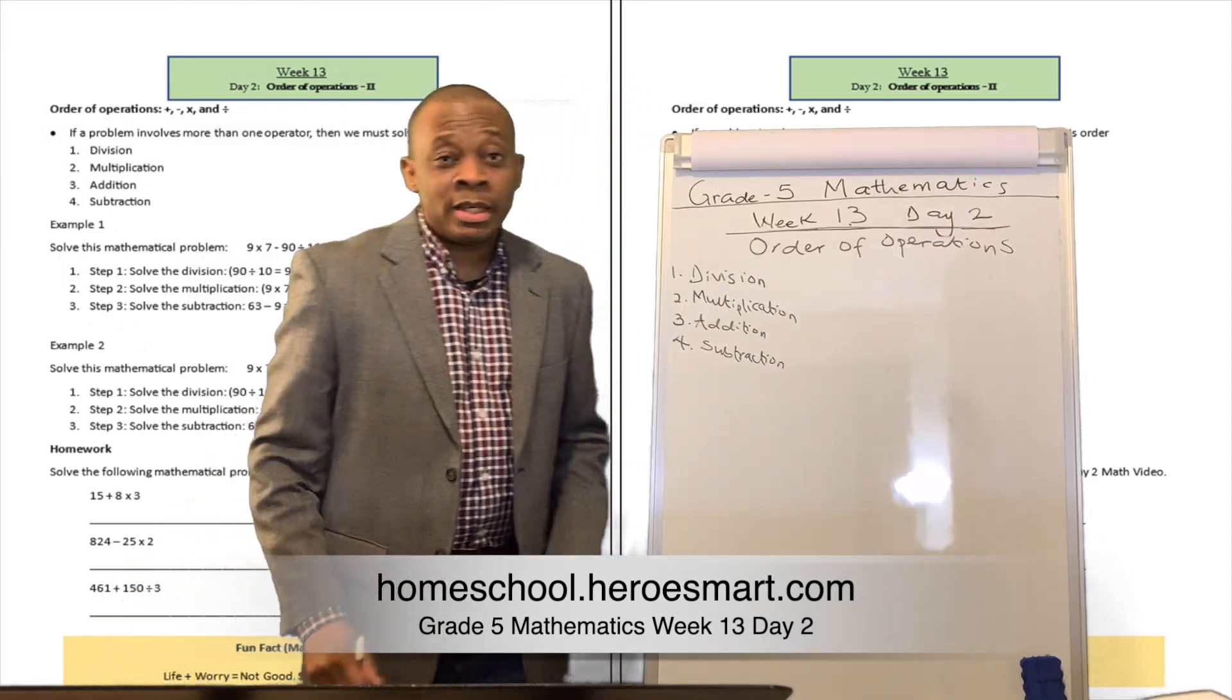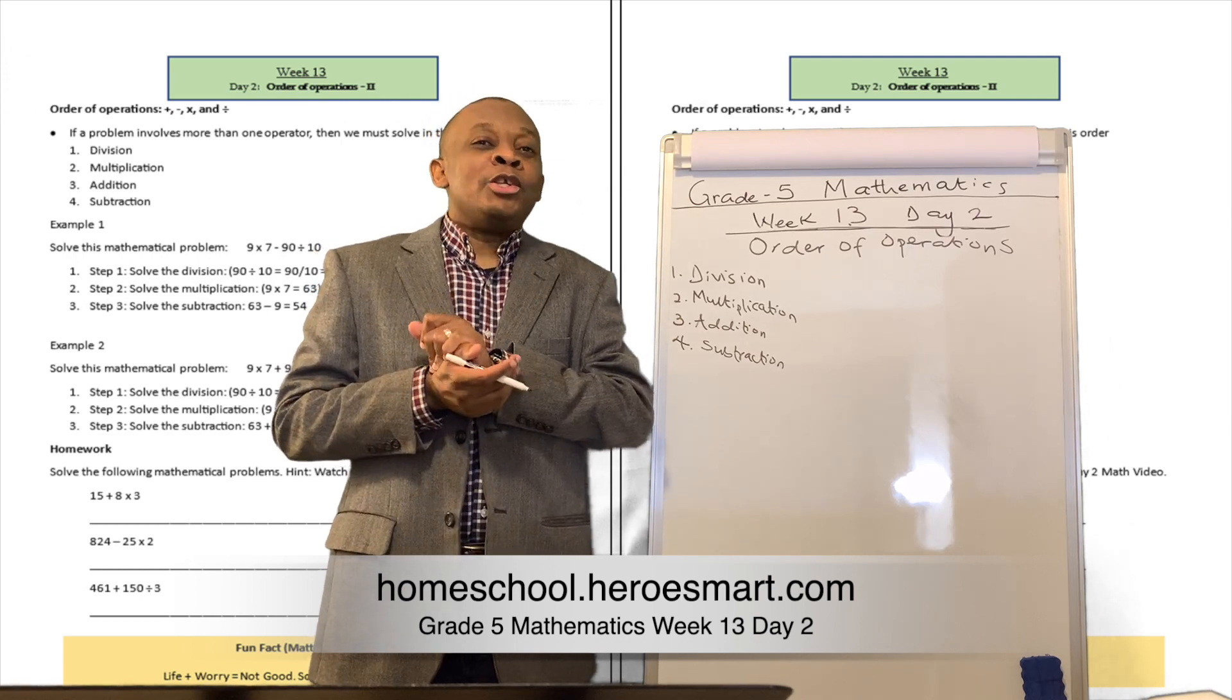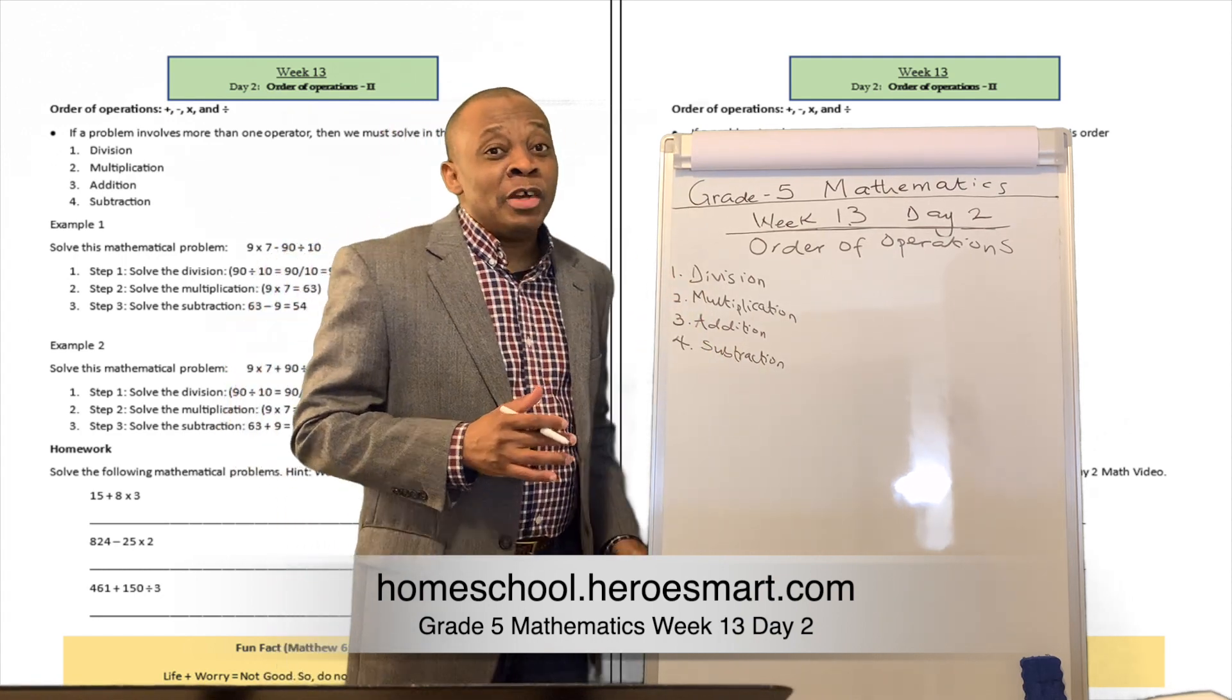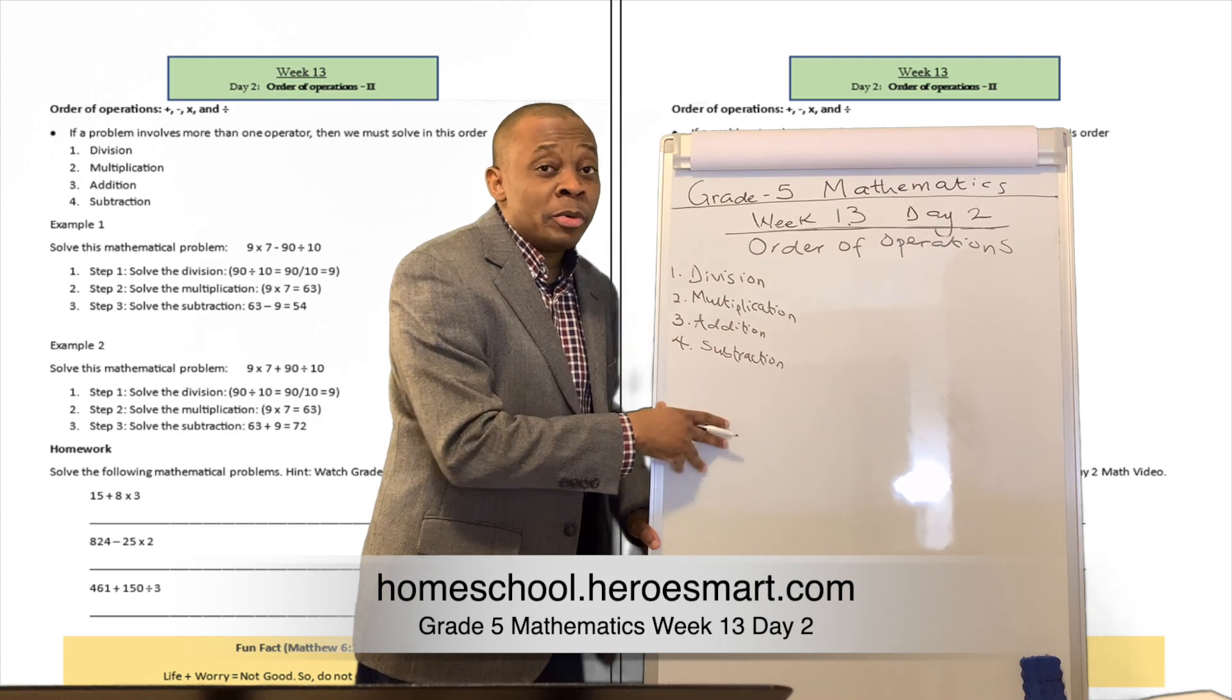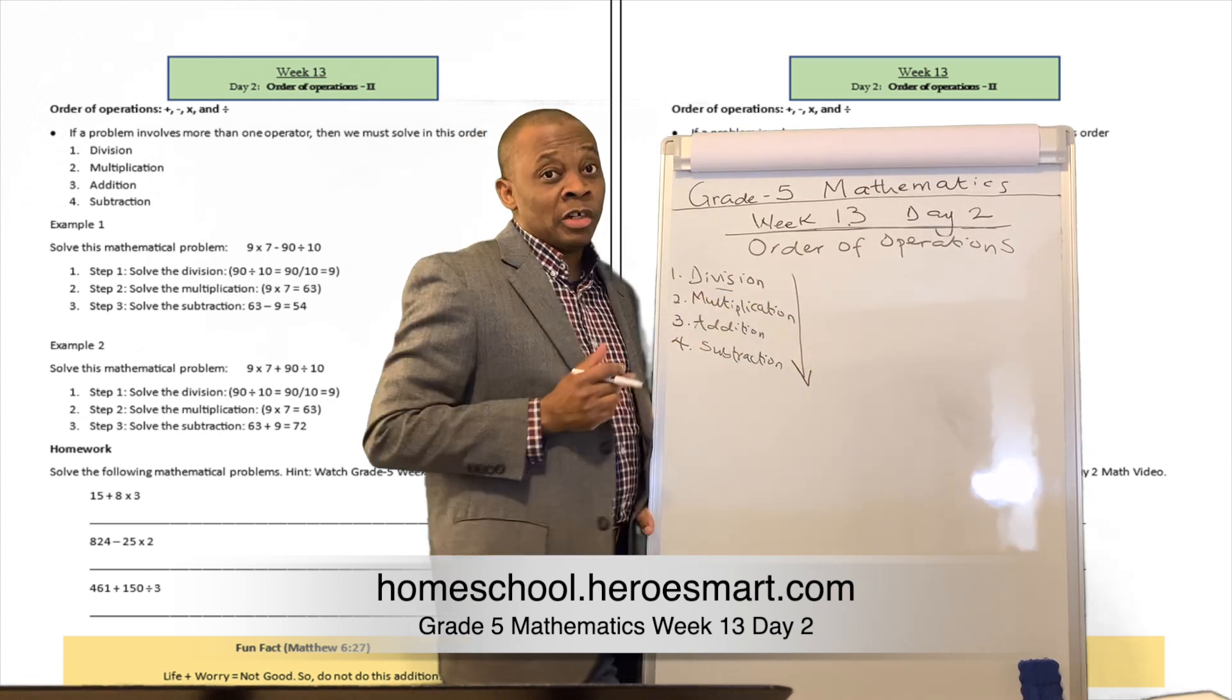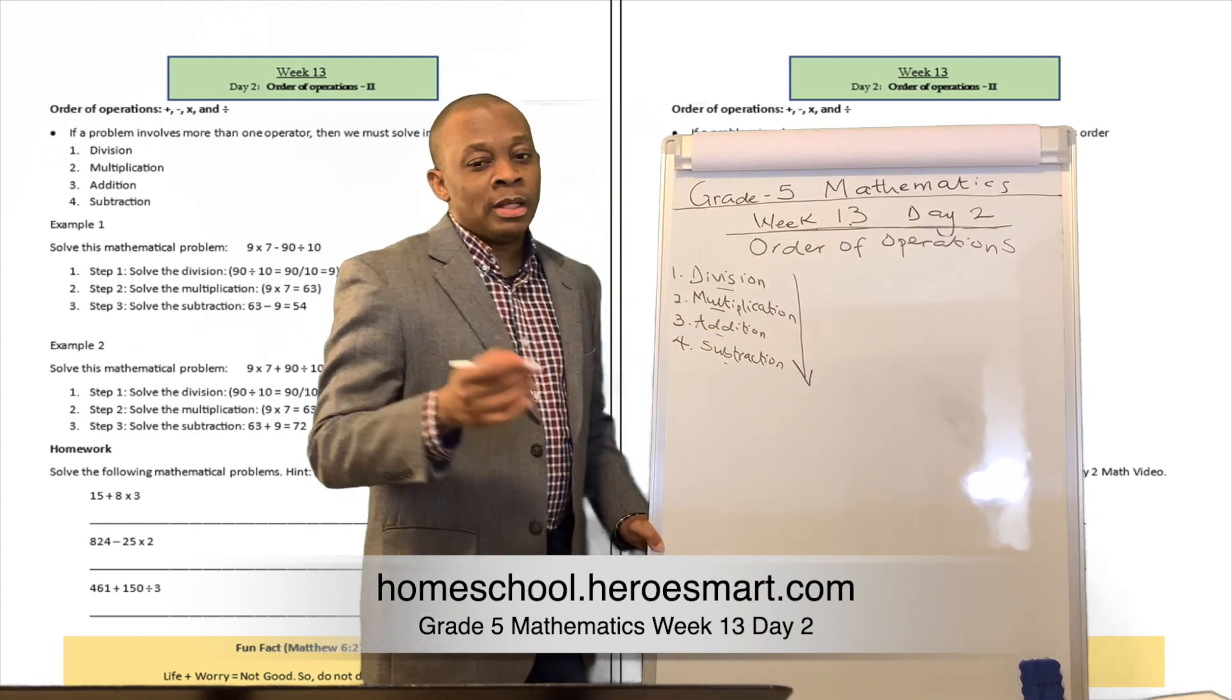Just like we talked about yesterday, if there are multiple operations in a single problem, if it is just addition and subtraction operations put together, you can do either in any order. It doesn't matter. But if you have problems that have division, multiplication, addition, subtraction operations, you've got to solve those problems in this order. You're going to solve the division part firstly, then the multiplication aspect secondly, and then thirdly, addition and subtraction. Well, let's prove that point.